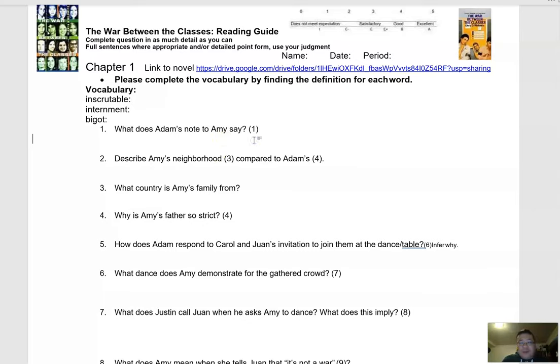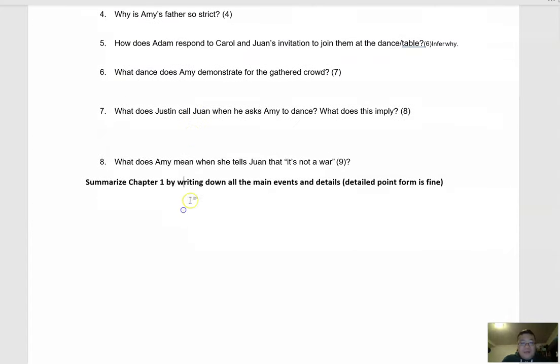For example, what does Adam's note to Amy say? Well, that's kind of a direct quote, so it's going to be kind of a direct line from the novel. Describe Amy's neighborhood compared to Adam's. Well, maybe you can put this in point form. Amy's neighborhood is, then Adam's neighborhood is. This one's straightforward. What country is Amy's family from? Her last name is Sumoto, so he's actually ethnically Japanese. So you can say Amy's family is from Japan. Why is Amy's father so strict? Well, this one's going to be a little more complicated. So do your best to put as much detail as you can. And here, I just want you guys to summarize the events of chapter one. Detail point form is fine. That way, when you kind of try to study for some of our future assignments, kind of look back, you kind of have a set of notes to refer to.